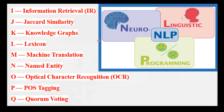I is for Information Retrieval — the process of searching for and retrieving relevant information from a collection of documents. Think of a search engine that returns results for a given query. For example, a user types 'best pizza in New York' and the search engine retrieves relevant web pages, articles, and reviews about the top pizza places in New York City.